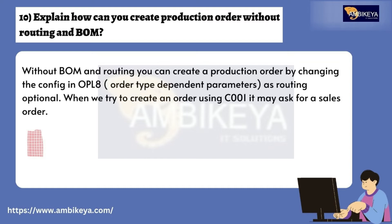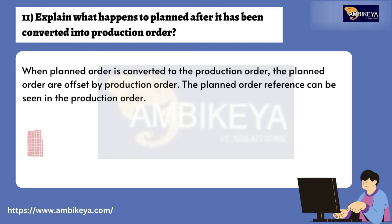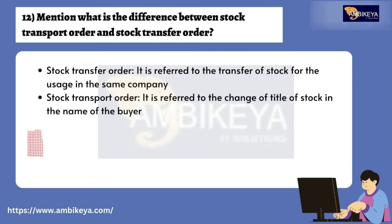Question number ten: explain how can you create a production order without routing and BOM? Without BOM and routing, you can create a production order by changing the config in OPL8 order type dependent parameters, setting routing as optional. When you try to create an order using CO01, it may ask for a sales order. Question number eleven: explain what happens to a planned order after it has been converted into a production order. When a planned order is converted to a production order, the planned order is offset by the production order, and the planned order reference can be seen in the production order.